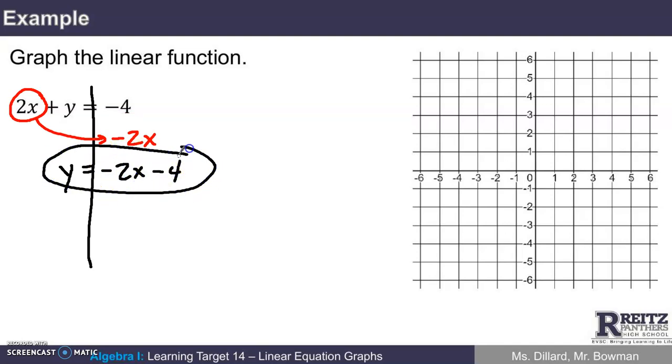And that thing is already in slope-intercept form, y equals something x plus something. My slope is negative 2, which we might write as negative 2 divided by 1. My y-intercept is negative 4. So to make this graph, I need to cross the y-axis at negative 4. I need to have a slope of negative 2 over 1.